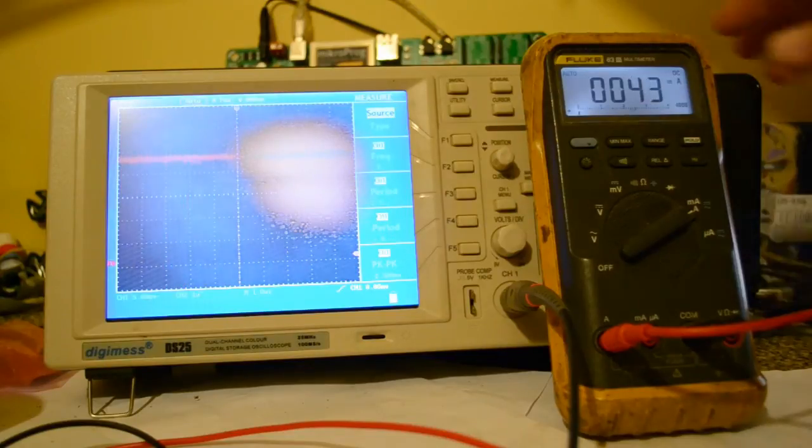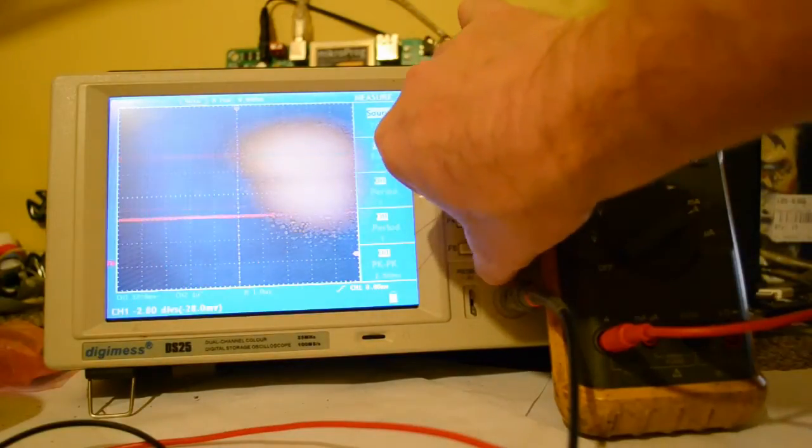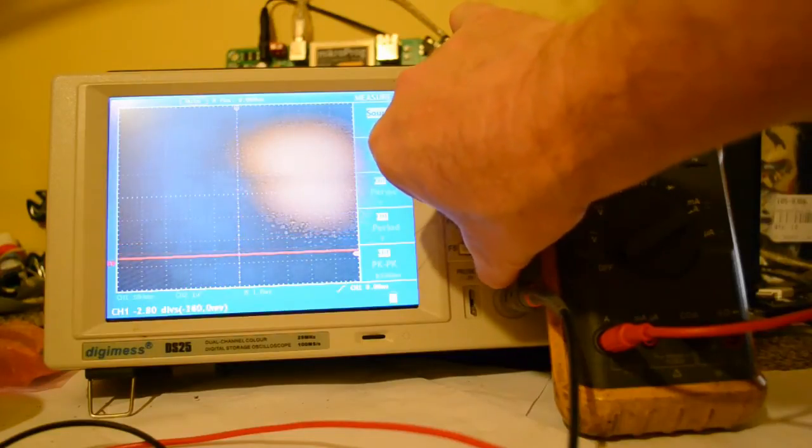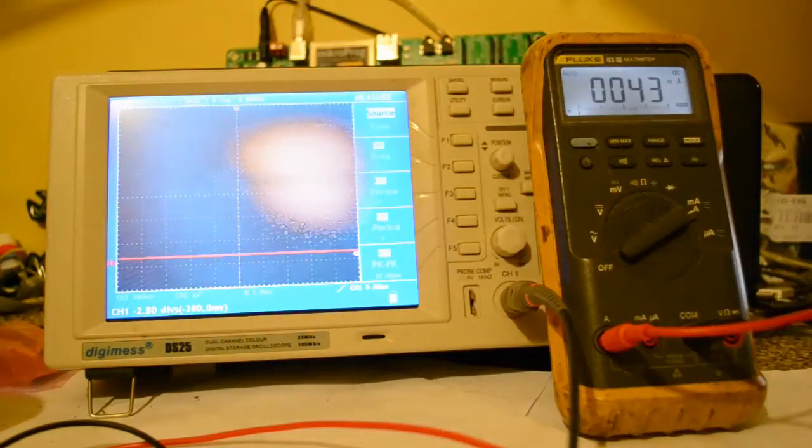All right, so adjust this scope. Right, so now I'm down to 100 millivolts per division.